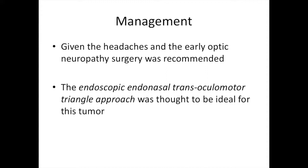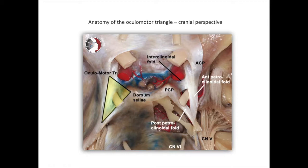The endoscopic endonasal trans-oculomotor triangle approach was thought to be ideal for this tumor, as opposed to a combination of an endoscopic approach with an open approach. It is useful to review the anatomy of the oculomotor triangle, which constitutes the posterior roof of the cavernous sinus. The triangle is formed by three dural folds: the anterior petroclinoidal fold, the posterior petroclinoidal fold, and the interclinoidal fold.